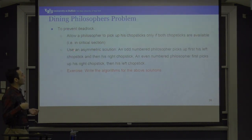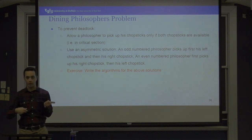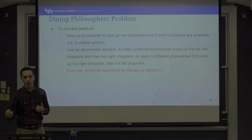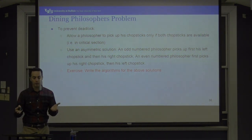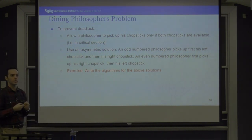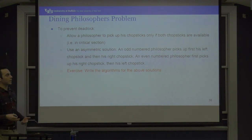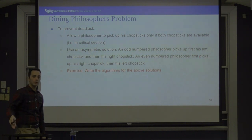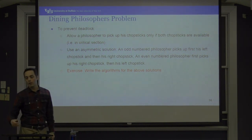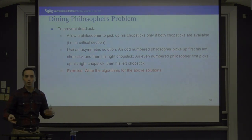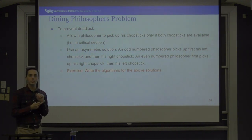One solution is to allow a philosopher to pick up chopsticks only if both are available — so they obtain both atomically, preventing the deadlock scenario. Another solution is an asymmetric one: make some philosophers right-handed and some left-handed. If I'm reaching for my right-hand chopstick and the other philosopher is reaching their left-handed one, the circular wait situation doesn't happen. This prevents deadlock from occurring.